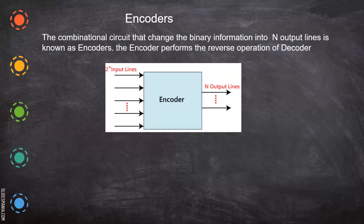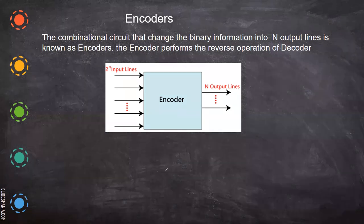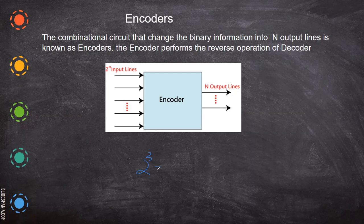Now we are going to see the encoder, which is the reverse of the decoder. In a decoder, there are n inputs and 2-power-n outputs. Whereas in an encoder, there are 2-power-n inputs and n outputs. For example, if we have 2-power-3, which is 8 inputs, the output will be 3.